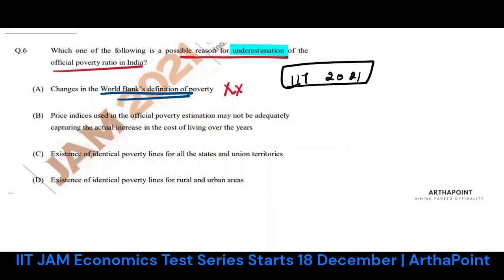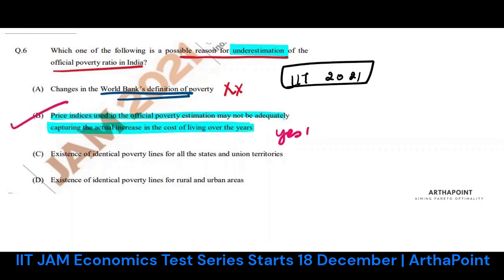Option: the price index used in the official poverty estimate may not be adequately capturing the increase in the cost of living over the years. Absolutely correct — the answer is yes. To understand why, consider people who receive pensions.